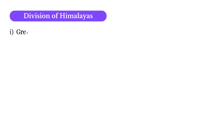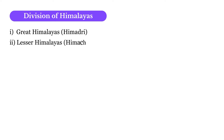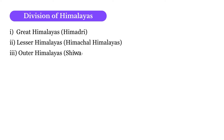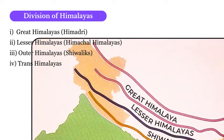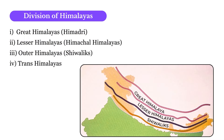The Himalayas can be divided into four groups: the Great Himalayas, also called Himadri; the Lesser Himalayas, also called Himachal Himalayas; the Outer Himalayas, also called Shivaliks; and the Trans Himalayas. The bottom range is Shivaliks, above that is Lesser Himalayas or Himachal, then Great Himalayas, and above the Great Himalayas is the Trans Himalayas.